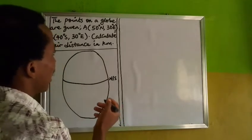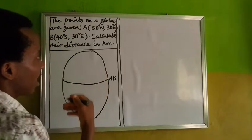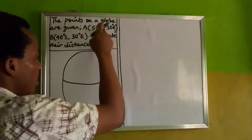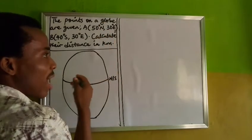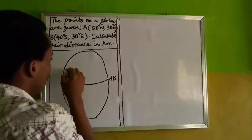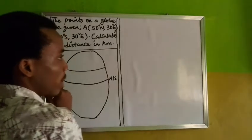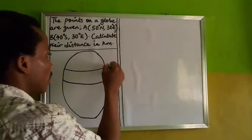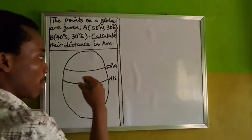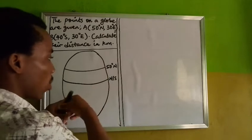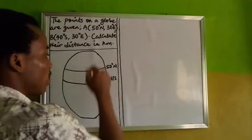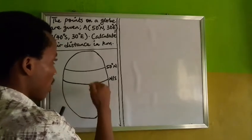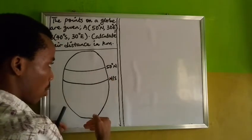Now I'm going to locate these points. The first one is point A, which is 50 degrees north. Mathematically, we have to be correct, so 50 degrees north will be somewhere around here, above the equator. It is above because north is above the equator. If it was south, it would be below.